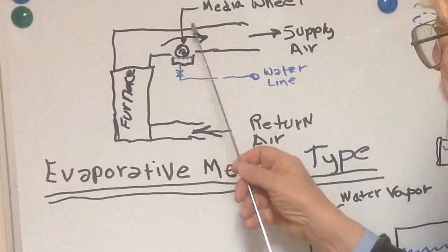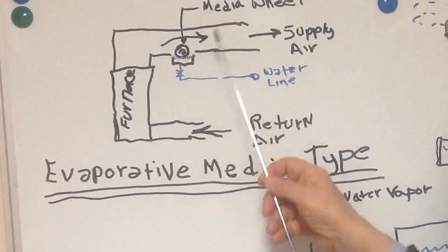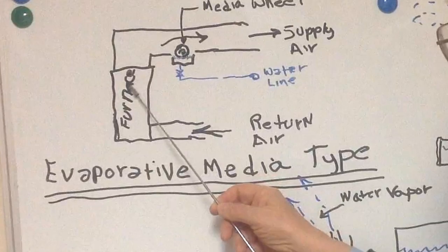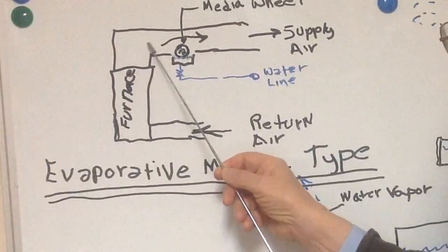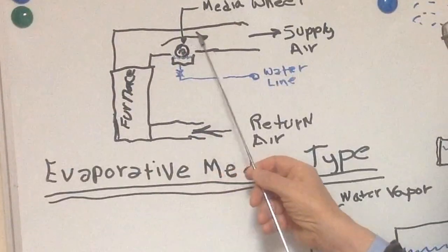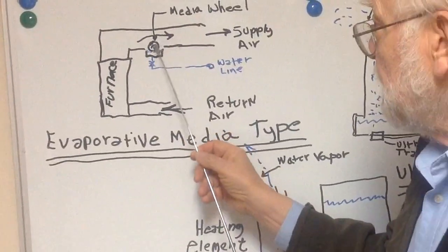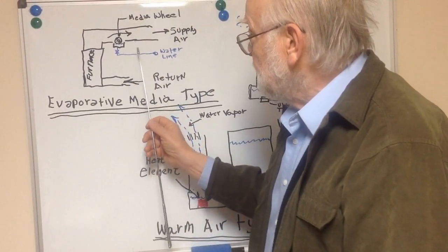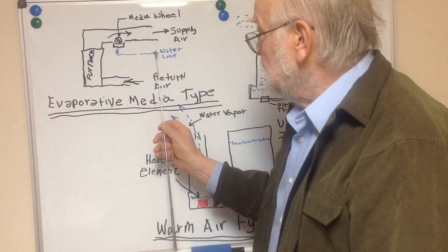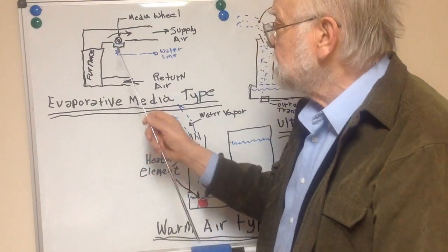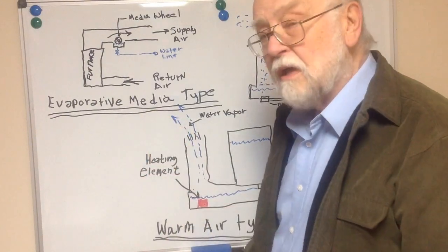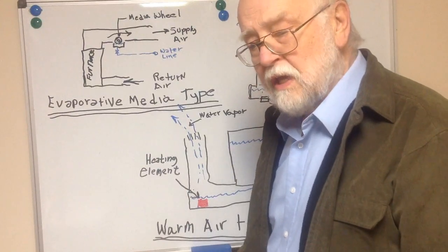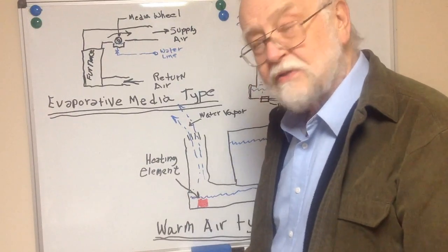It has a rotating wheel made of an absorbent material, perhaps a paper-related product. It rotates in a bath of water. As the heated air comes across this, it causes evaporation and goes into the space. This unit even had a direct connection to the water line so it automatically made up water as the water was evaporated into the space.